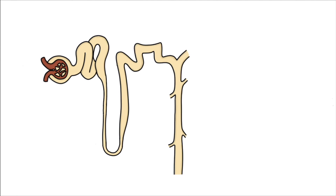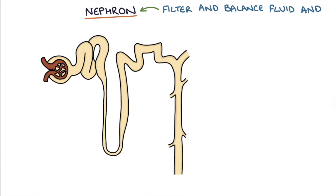Let's go through the mechanism of action. In order to understand how SGLT2 inhibitors work we need a very basic understanding of the function of the kidneys. The kidneys are made up of about 1 million tiny tubes called nephrons, and these nephrons are responsible for filtering and balancing fluid and electrolytes between the blood and the urine.